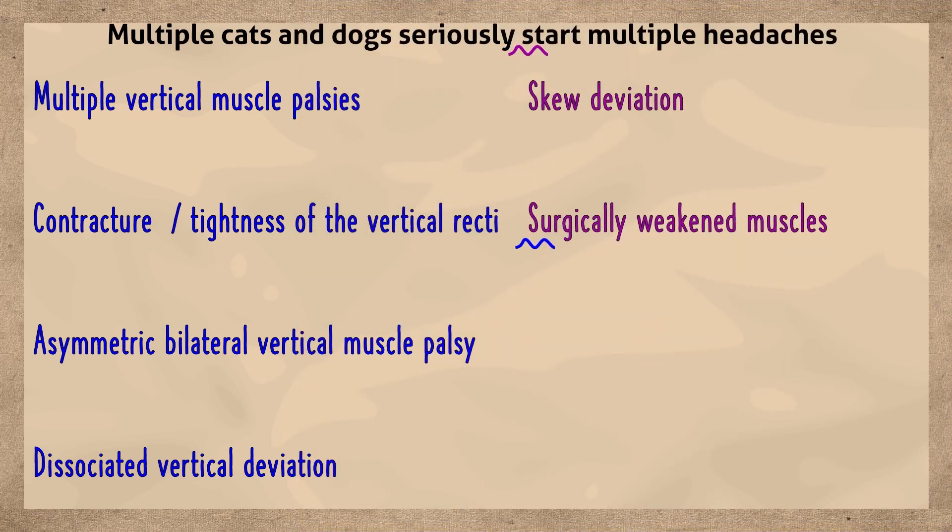A history can help diagnose muscles that have become weak due to surgery. A good history and tensilon testing can help in the diagnosis of myasthenia gravis.